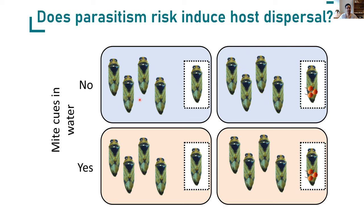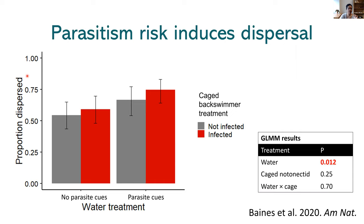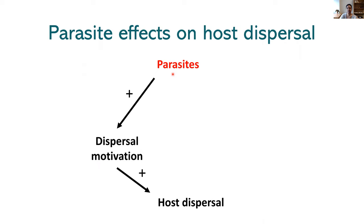We left them in the field and counted how many backswimmers dispersed — actually flying out of their tanks — over the course of a week. The results: on the Y axis we have the proportion of backswimmers that dispersed; on the X axis, the water treatment. Backswimmers exposed to parasite cues in the water were more likely to disperse than backswimmers not exposed to parasite cues, but the infection status of the caged backswimmer did not have an additional effect. So we found that the risk of parasitism increases dispersal motivation in the host.